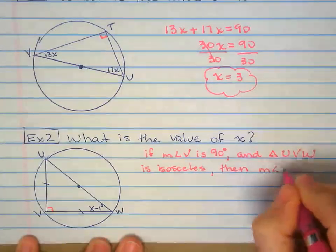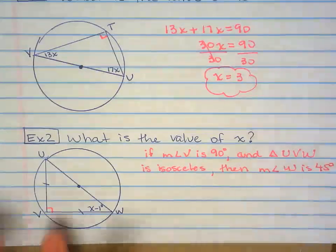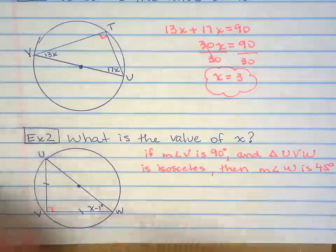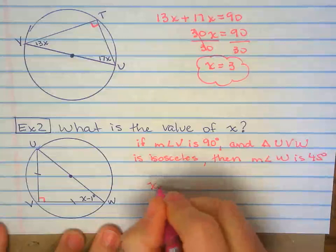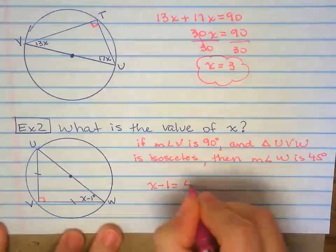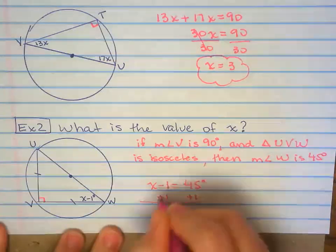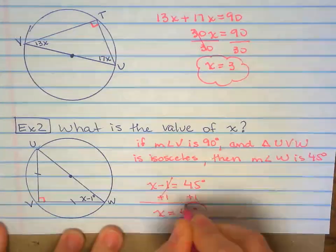Then, measure angle W is 45-45-90 special rights. All right. So X minus 1 equals 45 degrees. Add 1 to both sides. X equals 46 degrees. Or just 46.